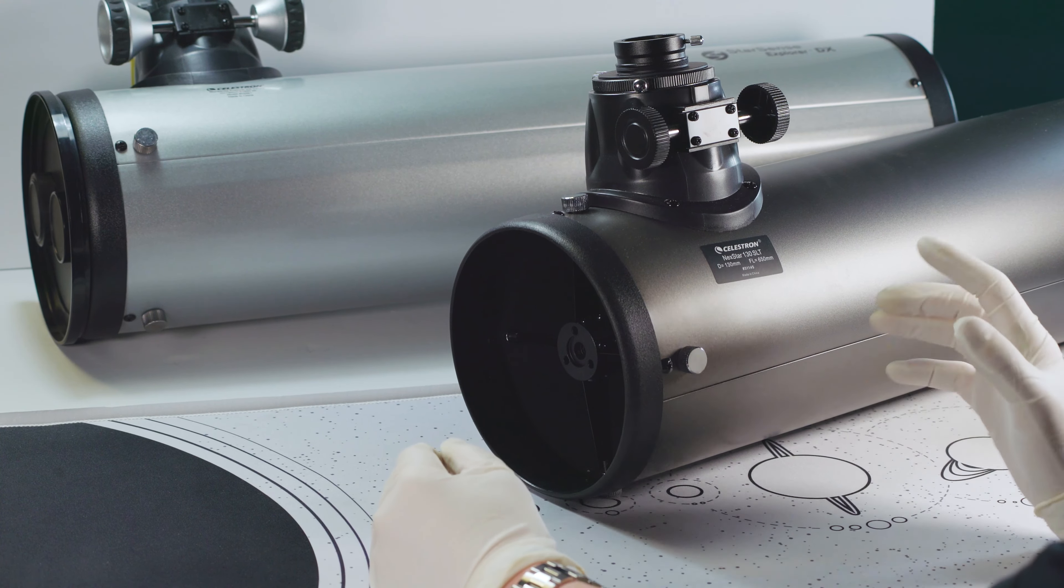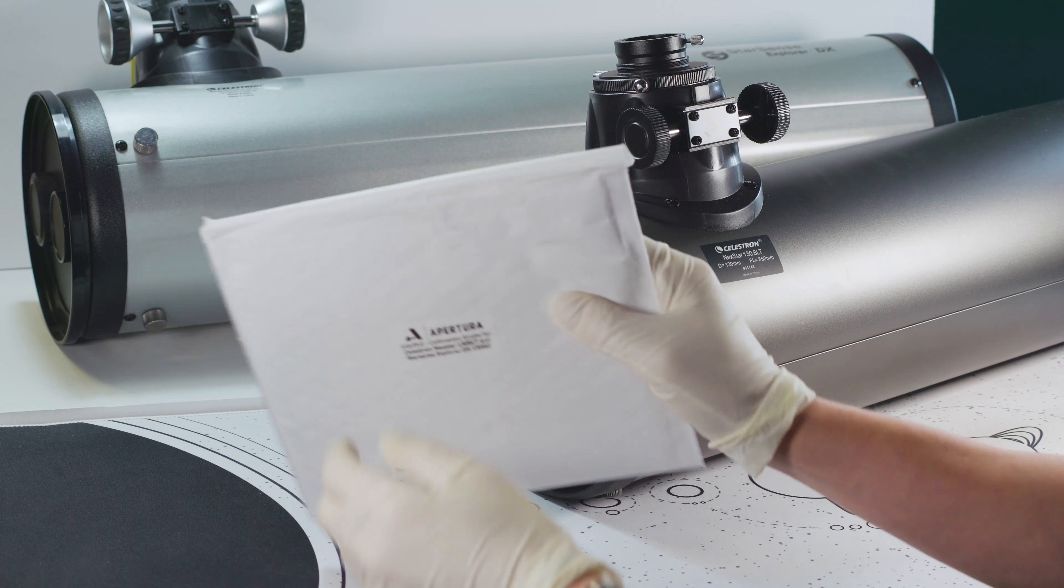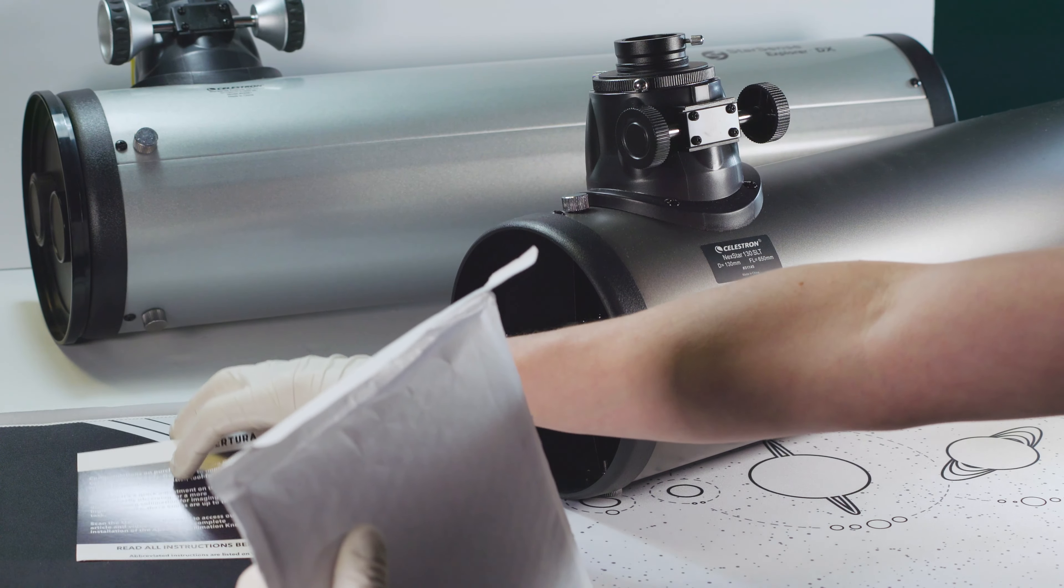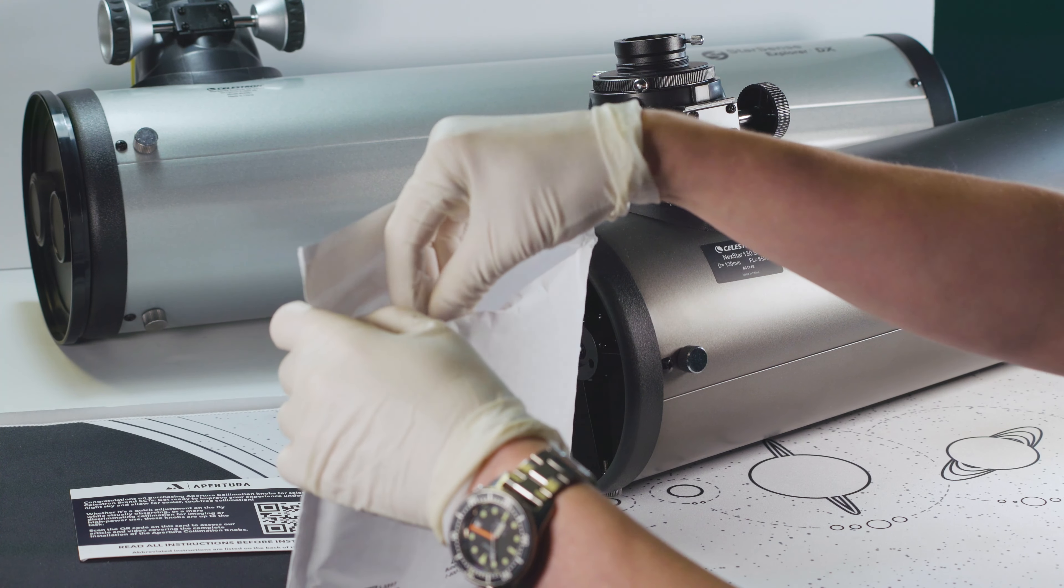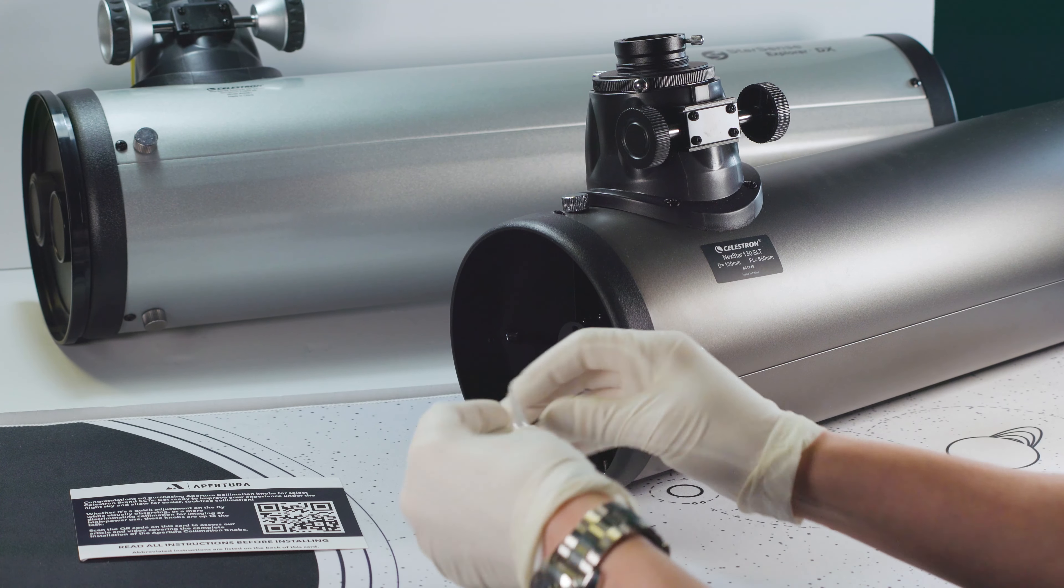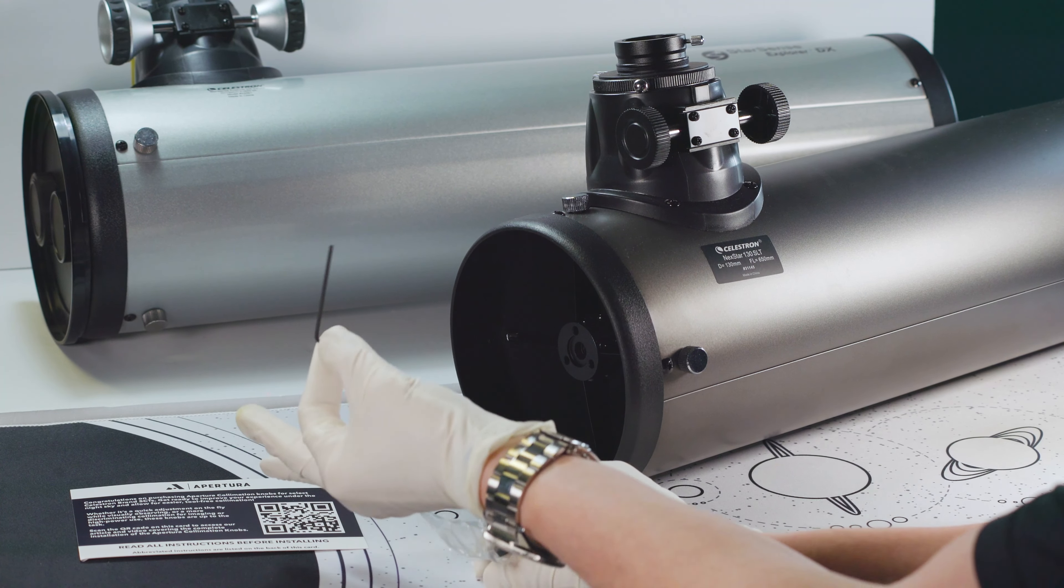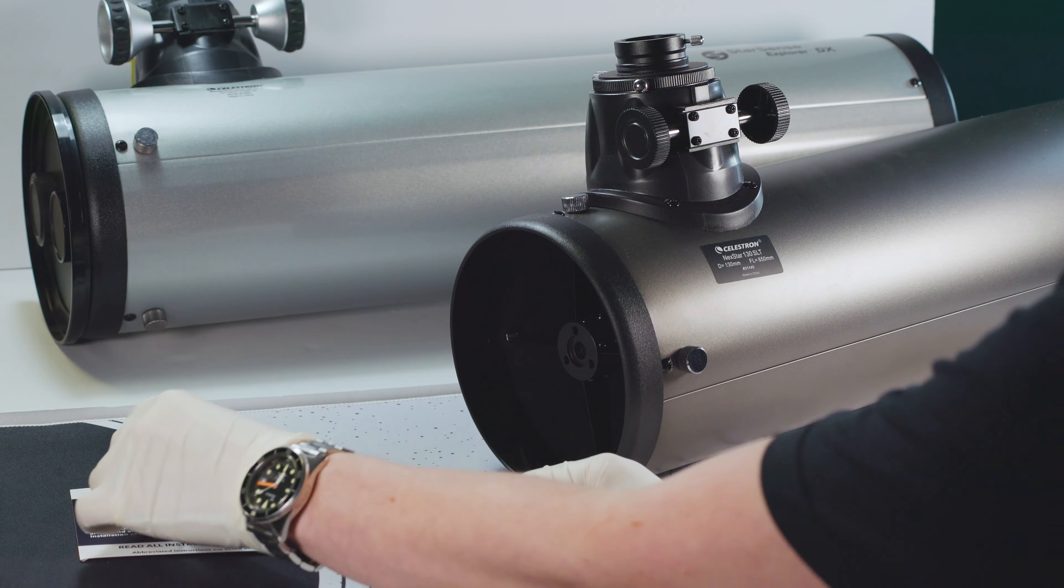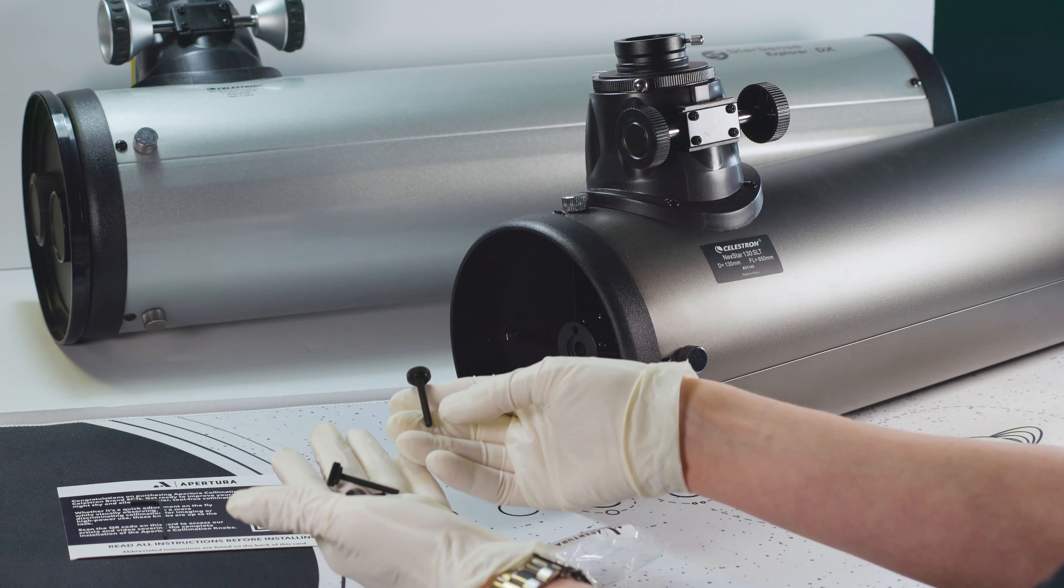So let's take a look at what you get with the upgrade kit. So I've got my little package right here with the upgrade card, which is gonna have an overview of the instructions we're gonna cover today, as well as some links for further information. And we're also going to get a hex head wrench for removing the stock screws and our three upgrade knobs.